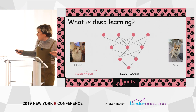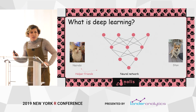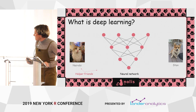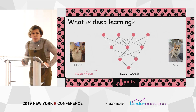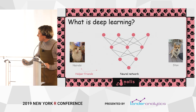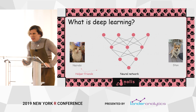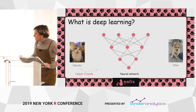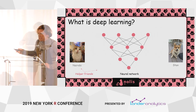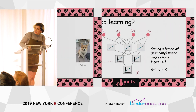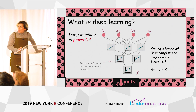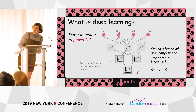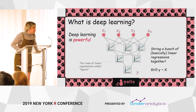This presentation is going to be filled with some pets, just to keep it nice and comfortable — last talk of the day, cute pets. So what's deep learning? It starts with these weird network charts you see all the time. They look complicated, you think you can't do that, they're not linear regressions, they're weird dots and lines — but there's a trick: they're actually just linear regressions.